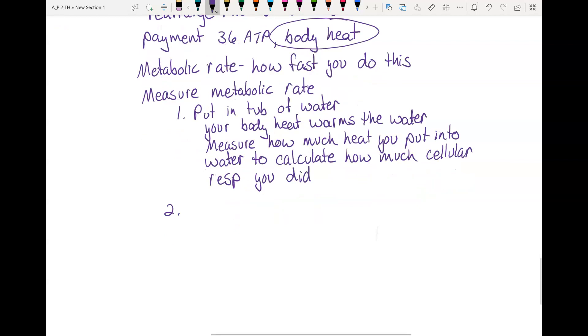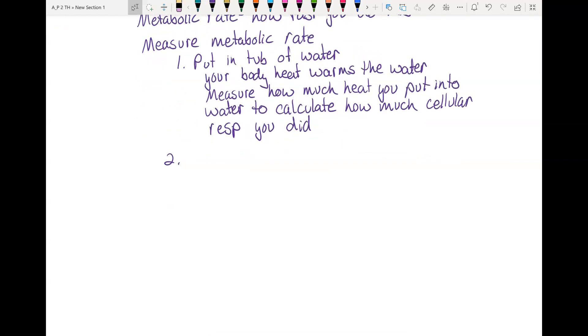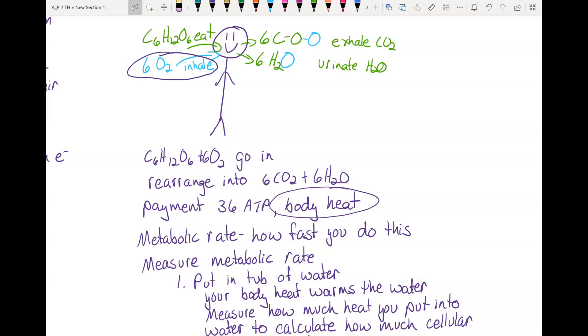The other common way to measure metabolic rate is oxygen consumption, so you can go into a sealed room. That way they know how much oxygen was in that room when you entered and they can measure how much oxygen is in that room when you're done. So they measure the oxygen, they put you in the room, and they measure how much oxygen you take out of the air.